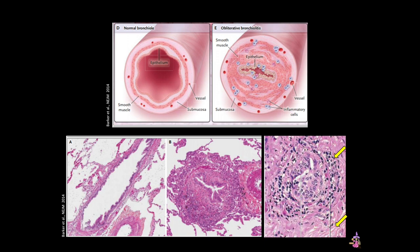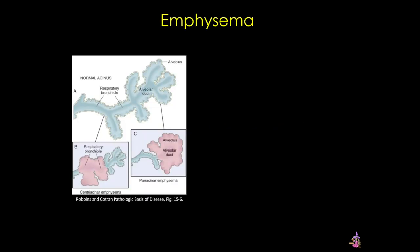Now let's move on into the respiratory zone. The chronic obstructive pulmonary diseases are characterized by progressive and often irreversible airflow limitations. Emphysema is characterized by irreversible enlargement of the air spaces distal to the terminal bronchiole, accompanied by destruction of their walls without obvious fibrosis. Based on the segments of the respiratory units that are involved, emphysema is classified into four major types, but only two — centriacinar and panacinar — cause clinically significant airflow obstruction.